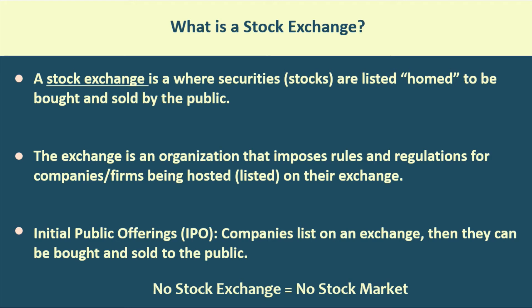If you're a company listed on a stock exchange, you have to follow the rules and regulations — if you don't, you'll be removed and can no longer be publicly traded. An initial public offering, also known as an IPO, is where a private company decides they want more exposure and to raise capital, so they go public. They make their shares available to the public by listing an IPO on an exchange — either the New York Stock Exchange or the NASDAQ — and once listed, their shares can be bought and sold by people like us.